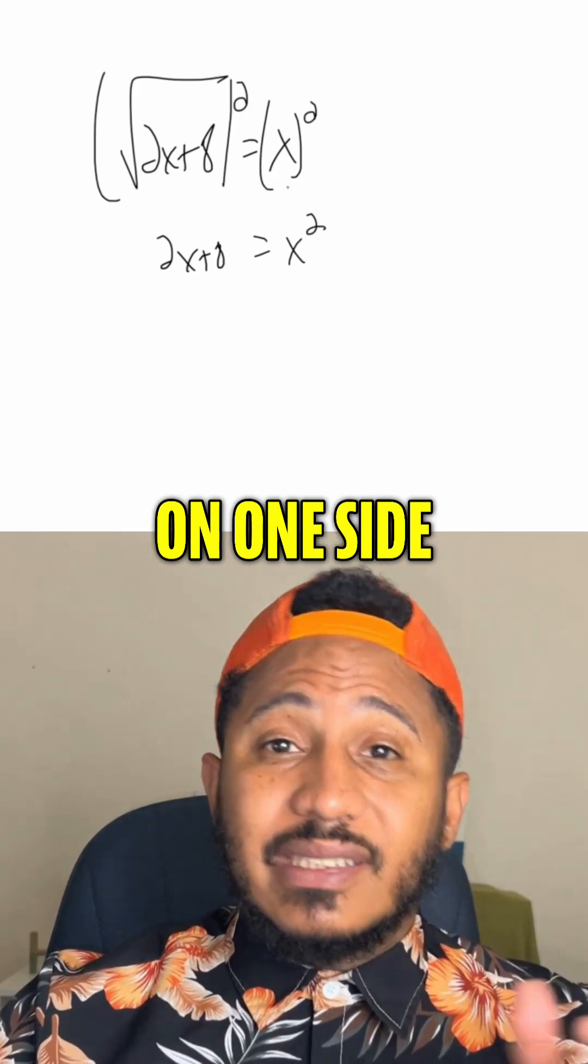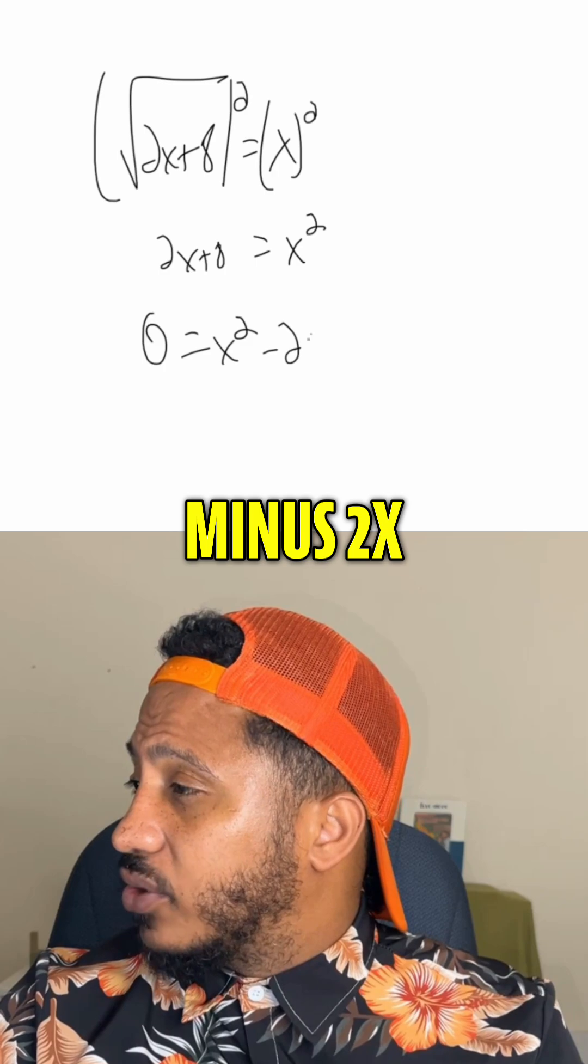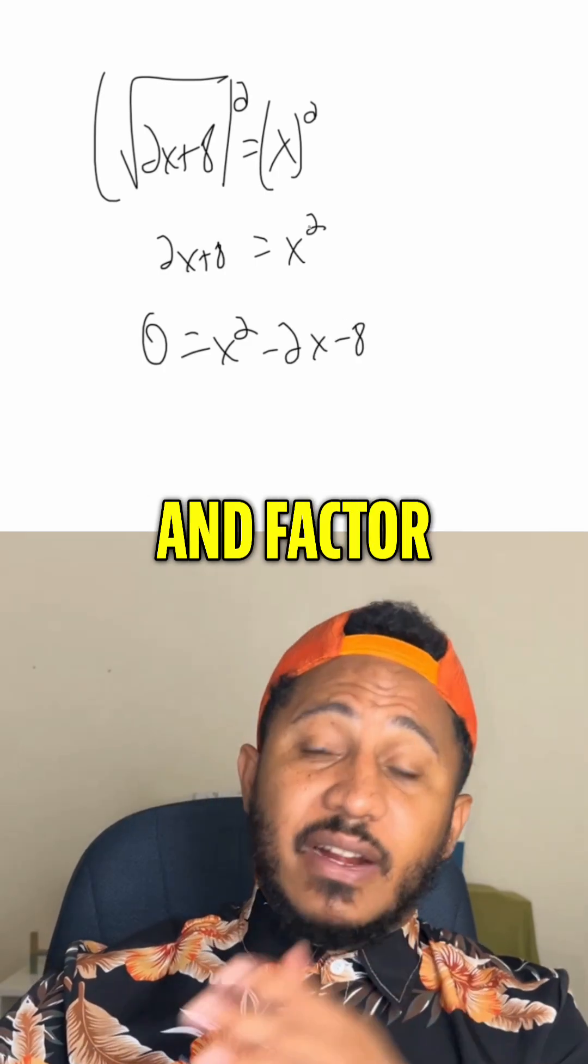Okay, then it's a quadratic, so we get 0 on one side, factor the other side. So subtracting 2x, subtracting 8, we get 0 equals x squared minus 2x minus 8. And now I'll try and factor the right-hand side.